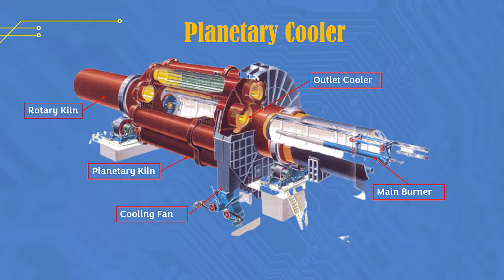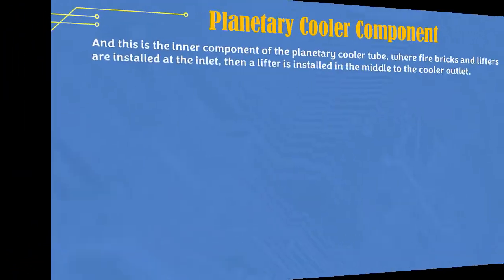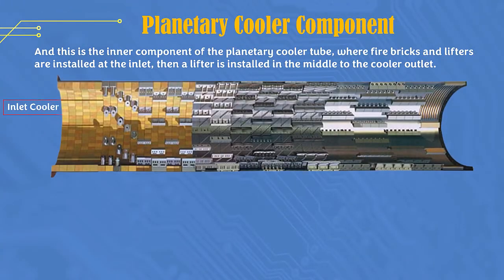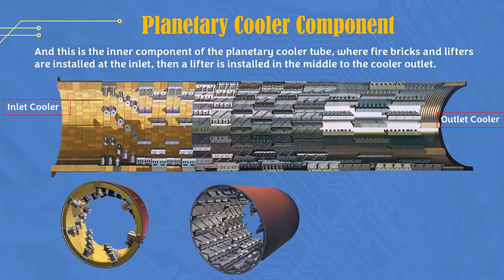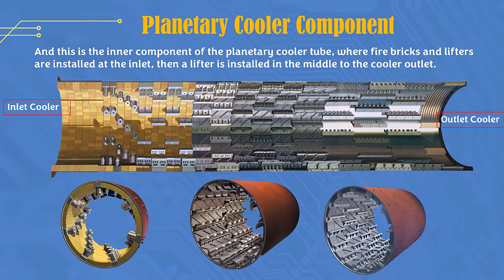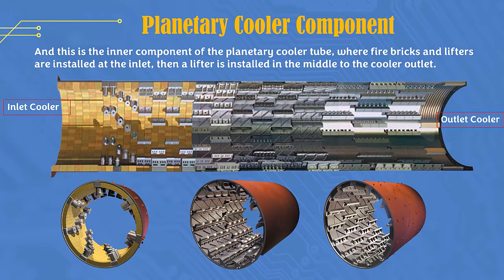The clinker cooling process occurs because of the movement during the rotating tube and the cooling fan installed at the cooler outlet. As shown in the following pictures and videos. This is the inner component of the planetary cooler tube, where fire bricks and lifters are installed at the inlet, then a lifter is installed in the middle through to the cooler outlet.